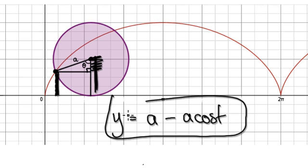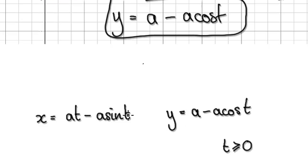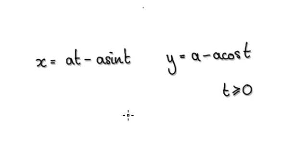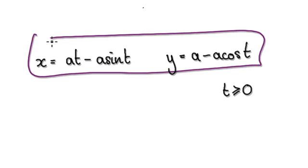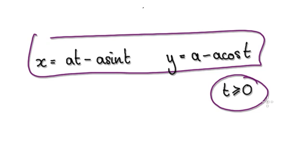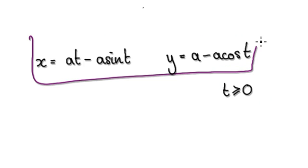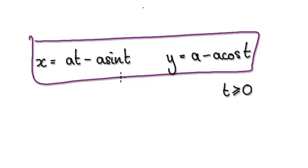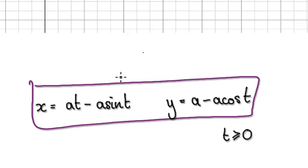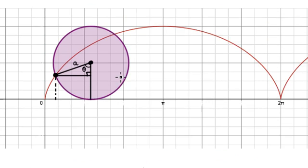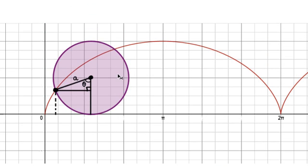So your parametric equations will be these: x = at − a·sin(t) and y = a − a·cos(t), for t greater than or equal to zero. If you punch this into a graphic calculator, it will actually draw out this cycloid.